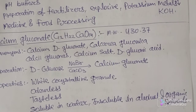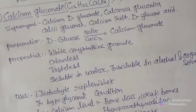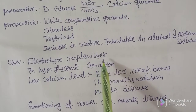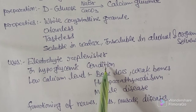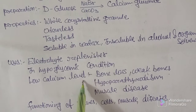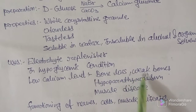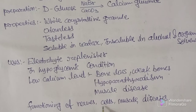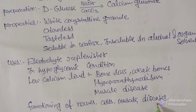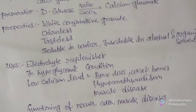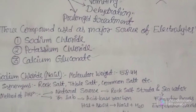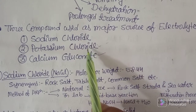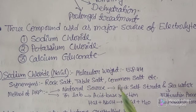Uses of calcium gluconate: it is used for electrolyte replacement, same as the other two electrolytes. It is useful in hypocalcemic conditions — for those suffering from low calcium levels, such as bone loss, weak bones, hypoparathyroidism, or muscle disease. It also supports nerve functioning and cell functioning in muscles. These three compounds — sodium chloride, potassium chloride, and calcium gluconate — are very important and come under compounds useful for replacement therapy, and can be asked for 10 marks in the exam.